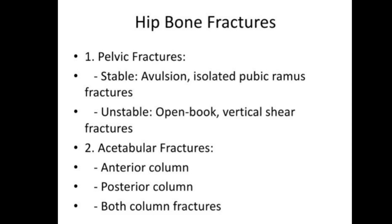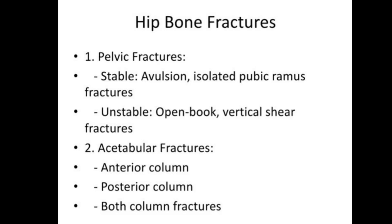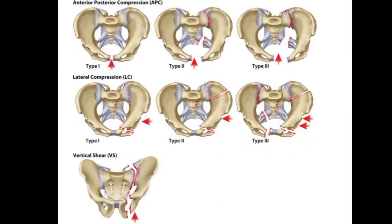Pelvic fractures have two types: stable and unstable. Stable fractures include avulsion fractures and isolated pubic ramus fractures. Unstable fractures include open book, vertical shear fractures. These are classified as anterior-posterior compression fractures type one, two, and three; lateral compression fractures type one, two, and three; and vertical shear fractures of the hip.